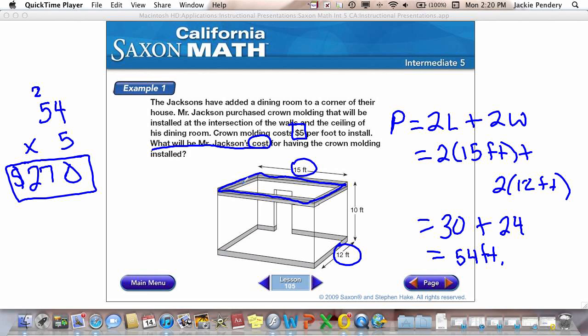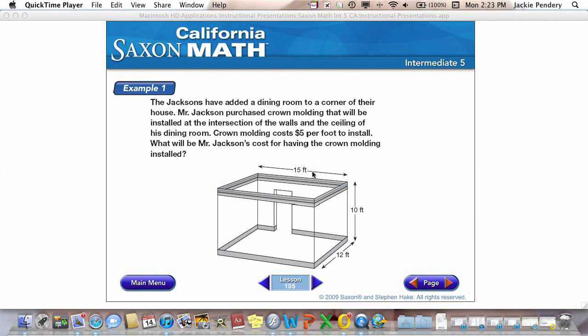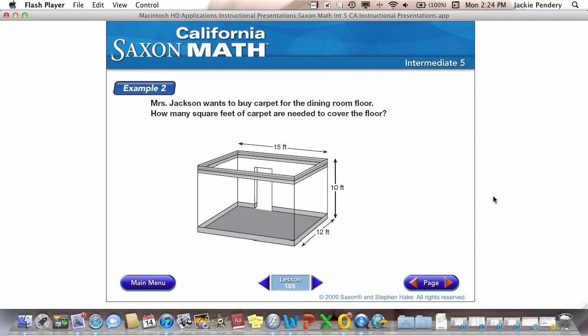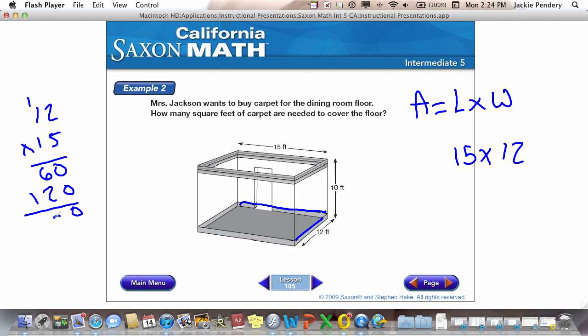Alright, let's look at example number two. Mrs. Jackson wants to buy carpet for the new dining room floor. How many square feet of carpet are needed to cover the floor? So we know that this is going to be an area problem. Area equals length times width. So for this one, my length is 15 feet times my width is 12 feet and 12 times 15. So my area equals 180 feet squared.